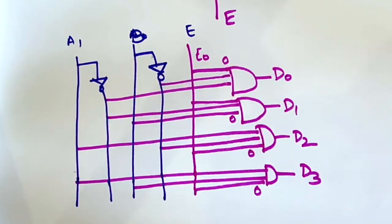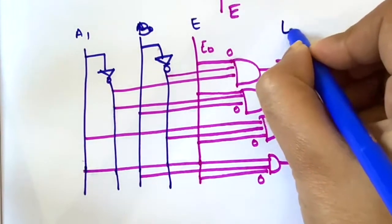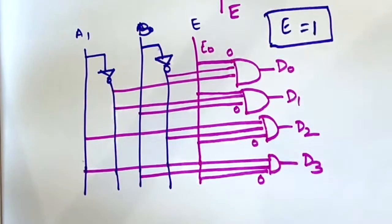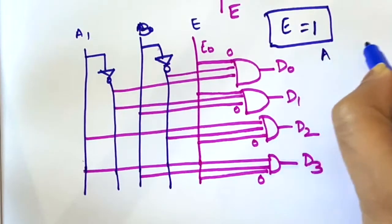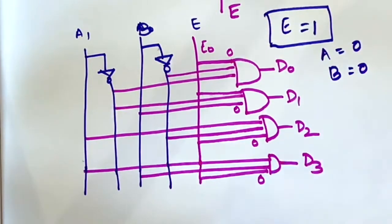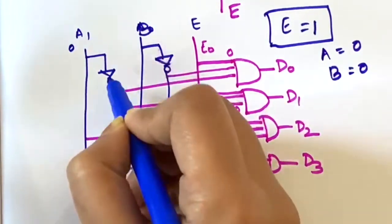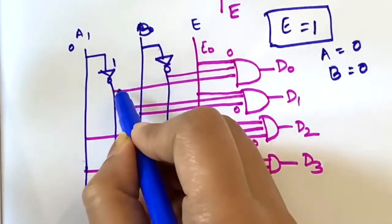Now let's check what happens when the value of E is 1. So now we are checking when E equal to 1. Let's say we have E equal to 1, the value of enable line is 1, and let's say A equal to 0 and B equal to 0. We are checking output for this input combination.